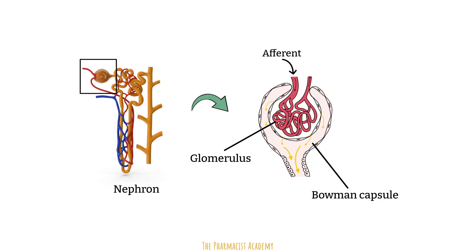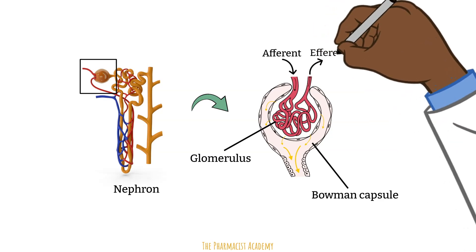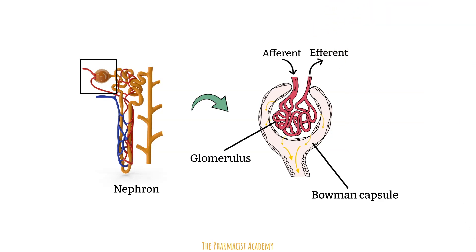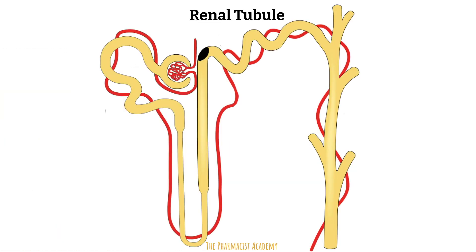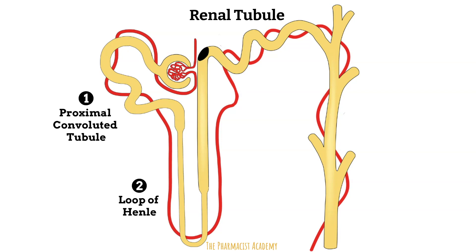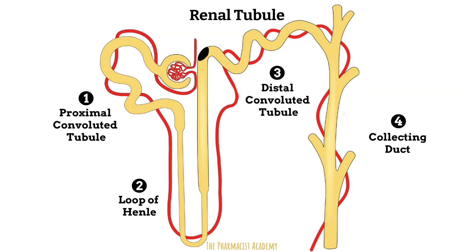The blood that was just filtered will then leave through the efferent arterioles and then through the renal vein to the rest of the body. So here's the renal tubule — it is divided into four parts: the proximal convoluted tubule, the loop of Henle, the distal convoluted tubule, and lastly, the collecting duct.